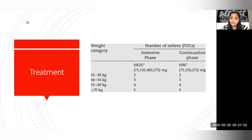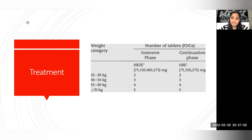During treatment, if the patient gains more than 5 kg, you will have to change the weight band accordingly. For example, if the patient initially was 38 kg and during treatment becomes 43–44 kg, you must increase the dose to three tablets. That is why it is necessary to monitor weight. Always ensure these tablets are consumed on an empty stomach. For patients over 70 kg taking five tablets, you can advise splitting: two tablets before food and three tablets two hours after food.